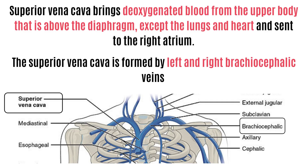The last great vessel is the vena cava. Vena cava is the largest vein in the body. Vena cava returns deoxygenated blood from all parts of the body to the heart. There are superior vena cava and inferior vena cava.